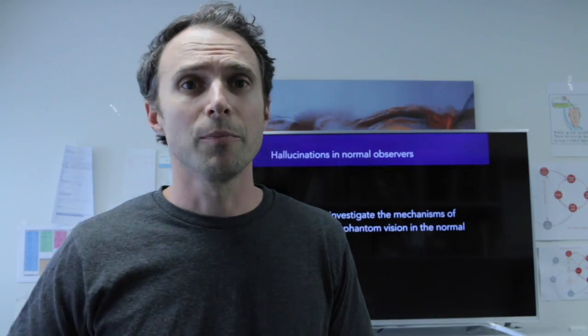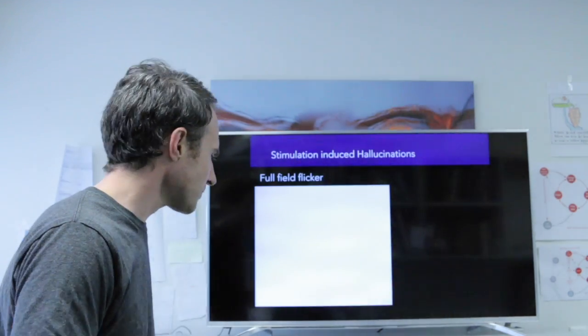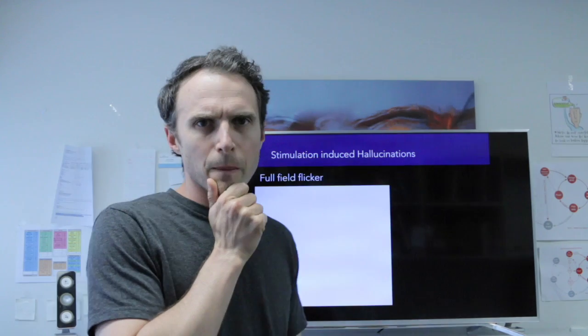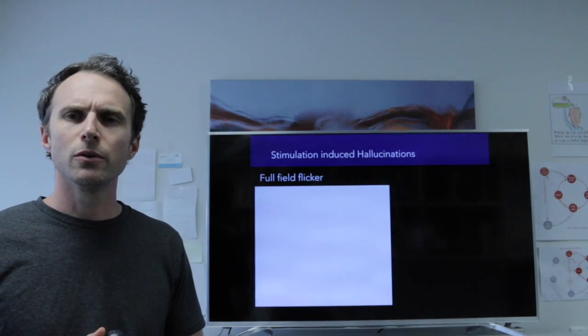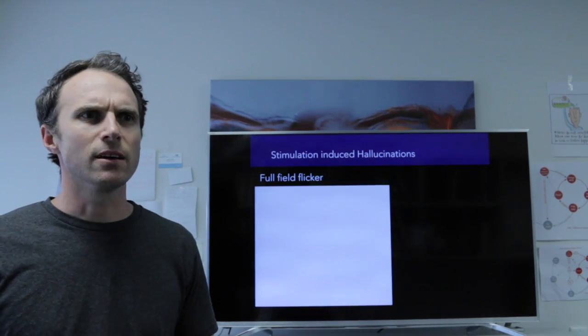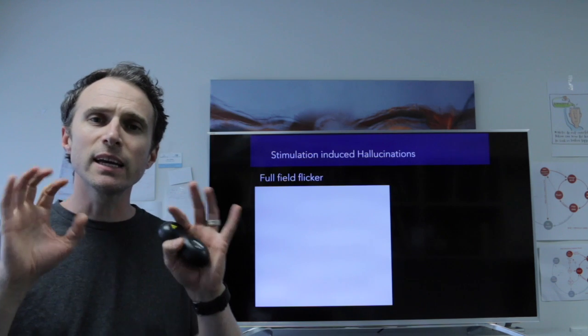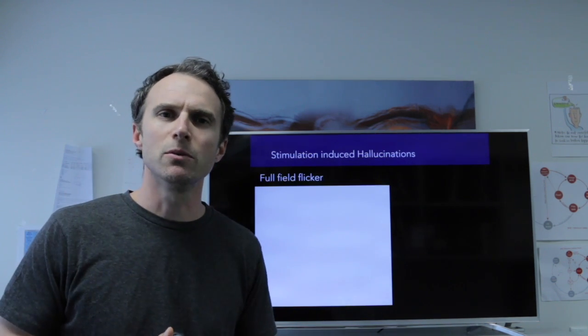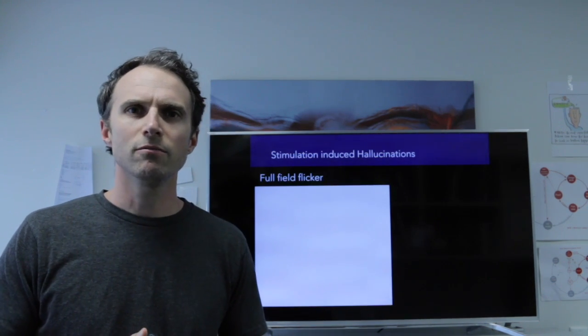So where do we start? Can we measure hallucinations, any kind of hallucinations, organic hallucinations, perhaps hallucinations in Parkinson's disease, visual hallucinations? One thing we've known for many years, I think over a hundred years, is if you flicker, if you flash light at people, they start to hallucinate. Super simple.